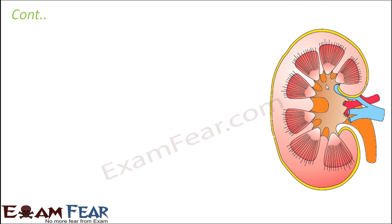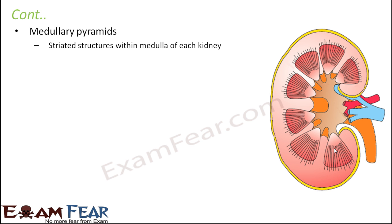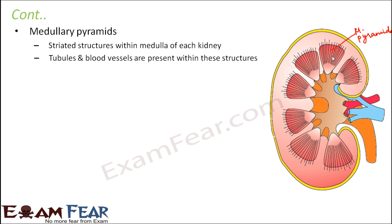Within the medulla you can see medullary pyramids — striated structures within the medulla of each kidney. The striations are visible and that is why they are called striated structures. Inside these medullary pyramids, tubules and blood vessels are present.